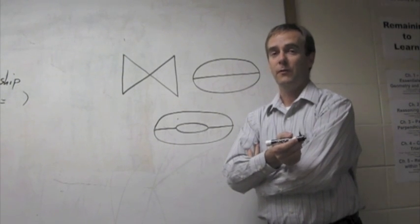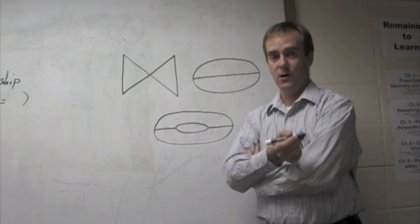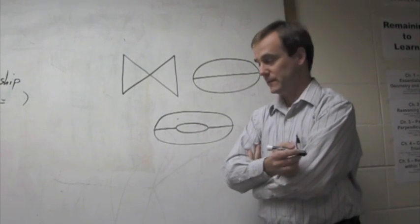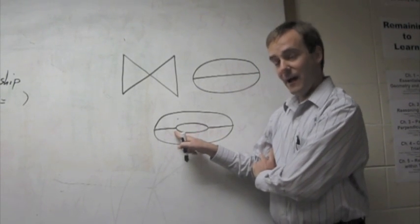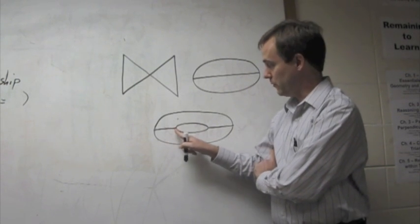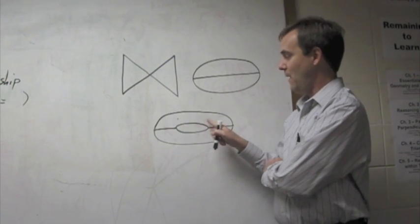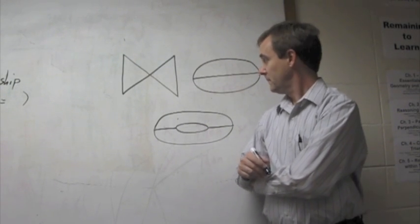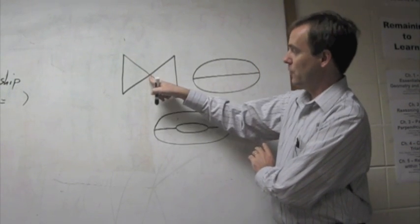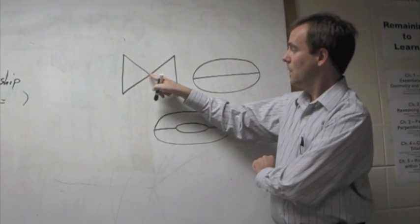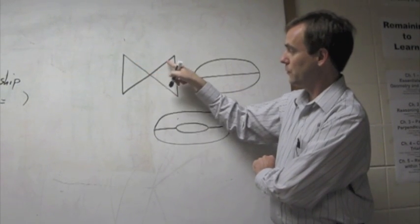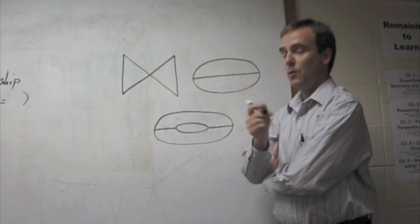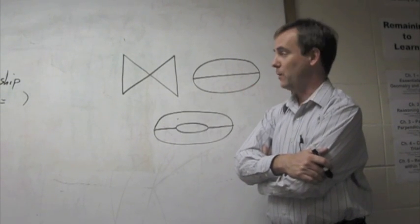Specifically, what he cared about was whether nodes were odd or even. An odd node is one that has an odd number of lines coming out of it. Here's a node — how many lines come out of this particular node? It goes that way, that way, and that way, for a total of three. That's an odd node. How about this node right here? How many lines come out of that node? One, two, three, four. That's an even node. So he took a look at a whole bunch of different graphics and figured out what he could about the nodes.